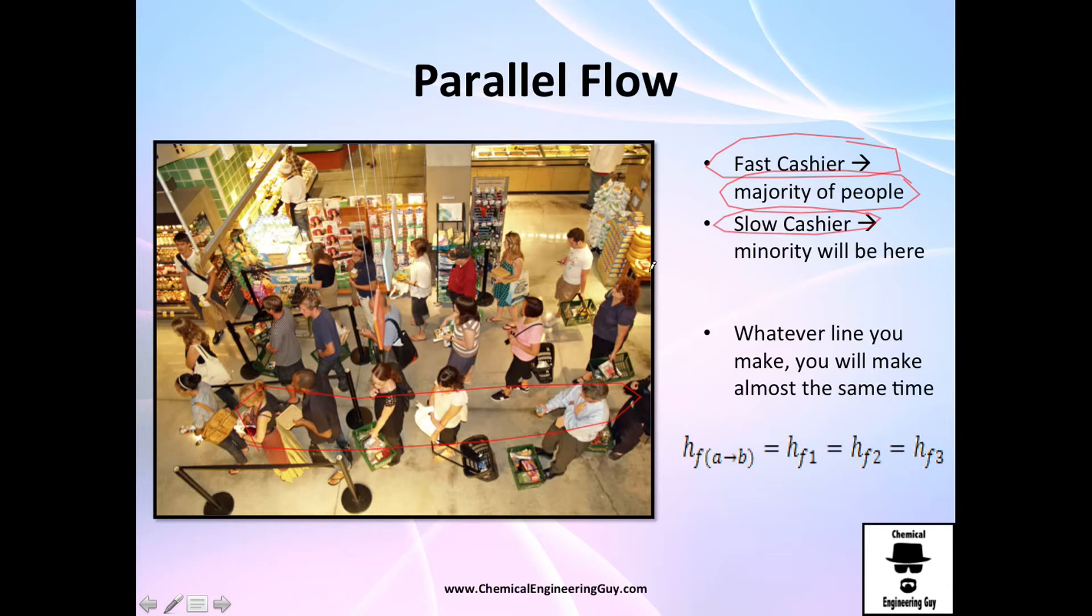For the slow cashier, many people will avoid it. Eventually, you'll see that you aren't that lucky—it's the same whether you go into the slow line or the fast line, because the flow of people equilibrates. The friction loss per unit mass is the same in each pipe.